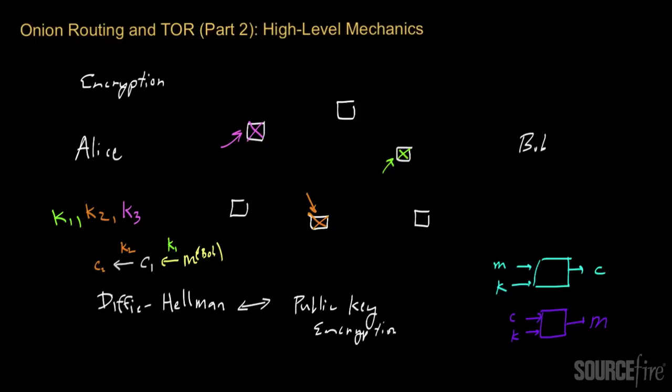And then finally she'll take this last ciphertext C2 and she will encrypt it one more time. She'll encrypt it one more time and this time she will use the key K3 to encrypt this ciphertext and she'll get back a third final ciphertext which we'll call C3. So essentially this ciphertext C3 is a triply encrypted ciphertext. It has been encrypted really multiple times starting with M to C1 to C2 to C3. So this is a nested type of encryption.